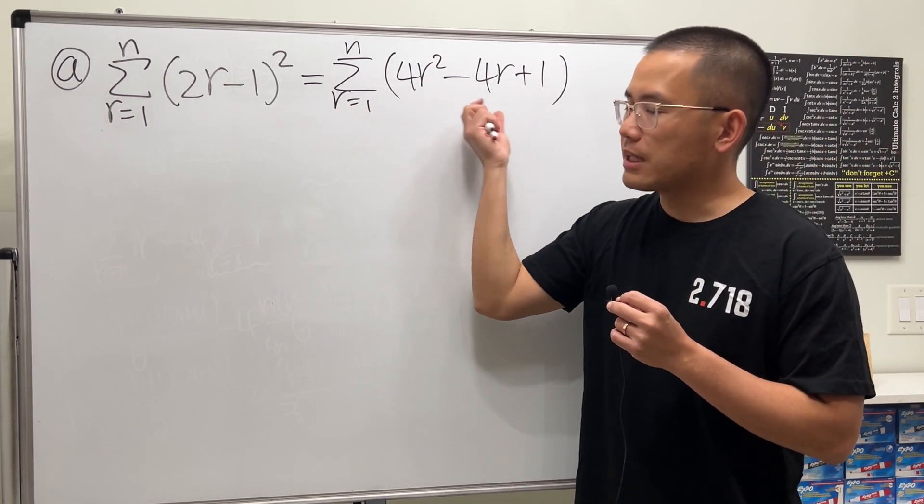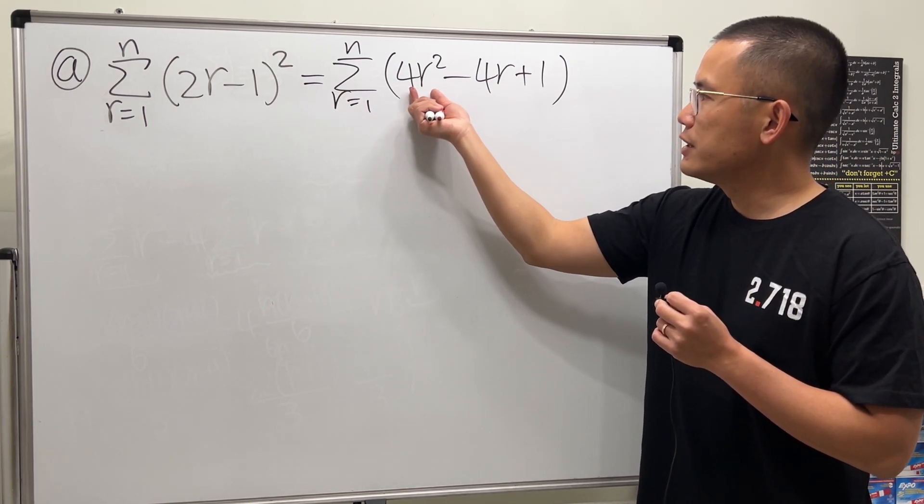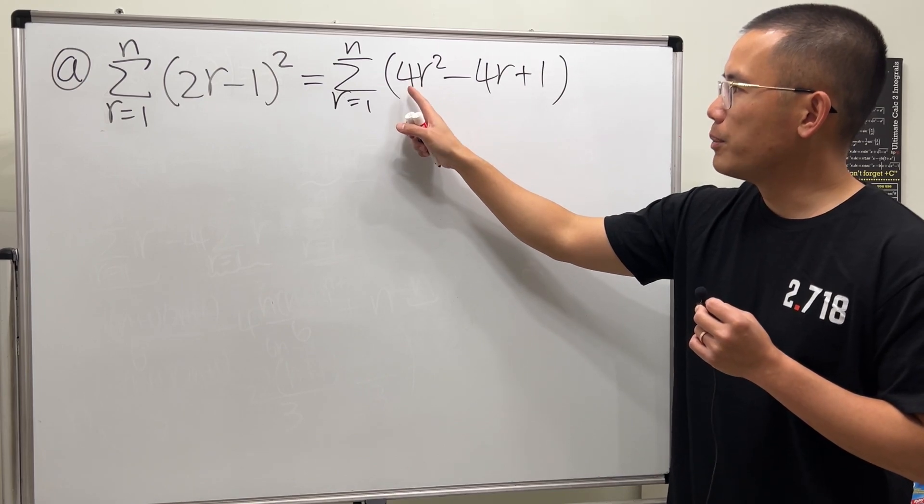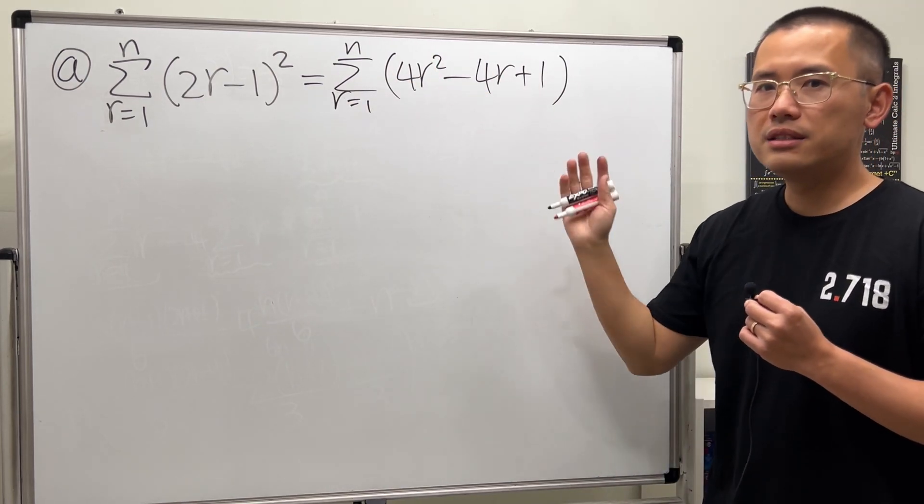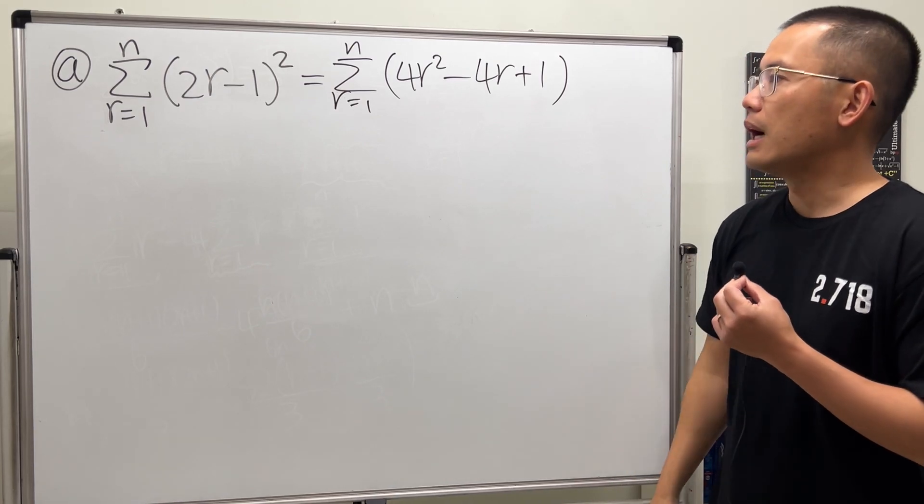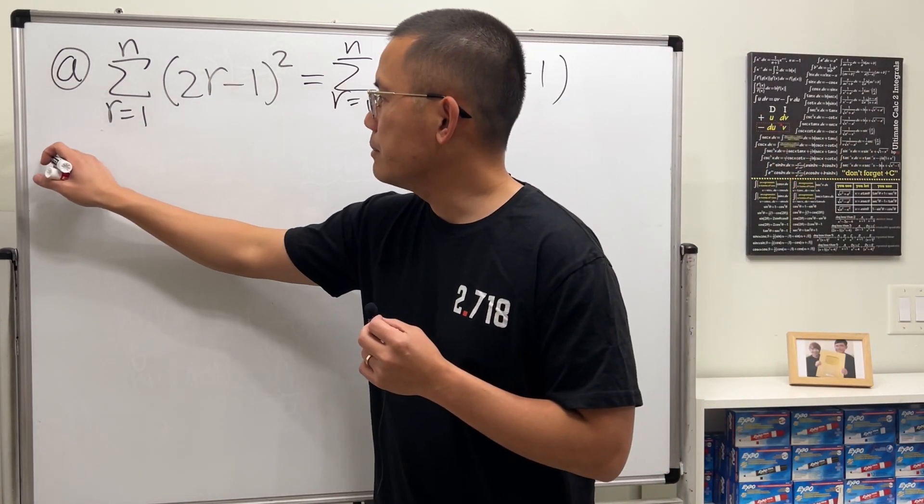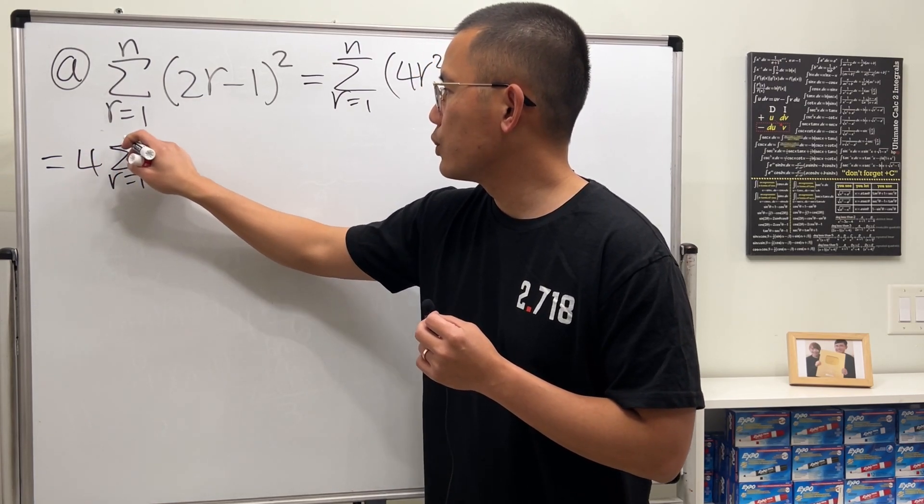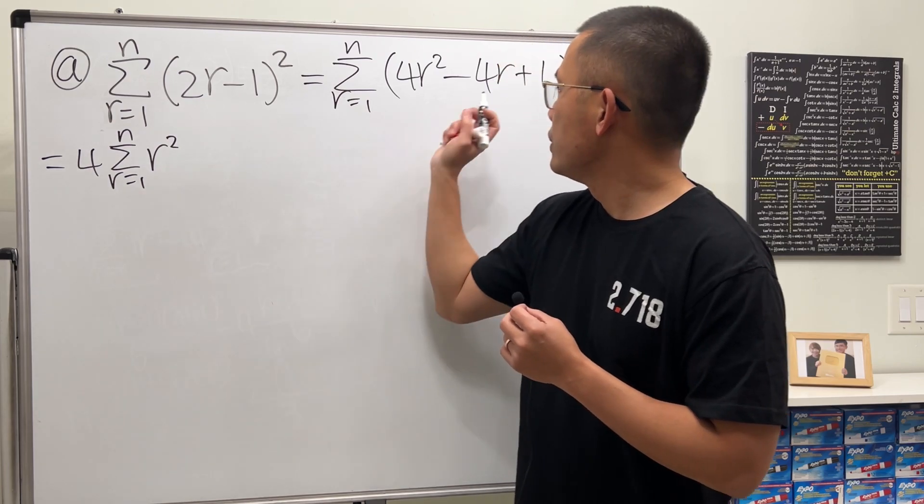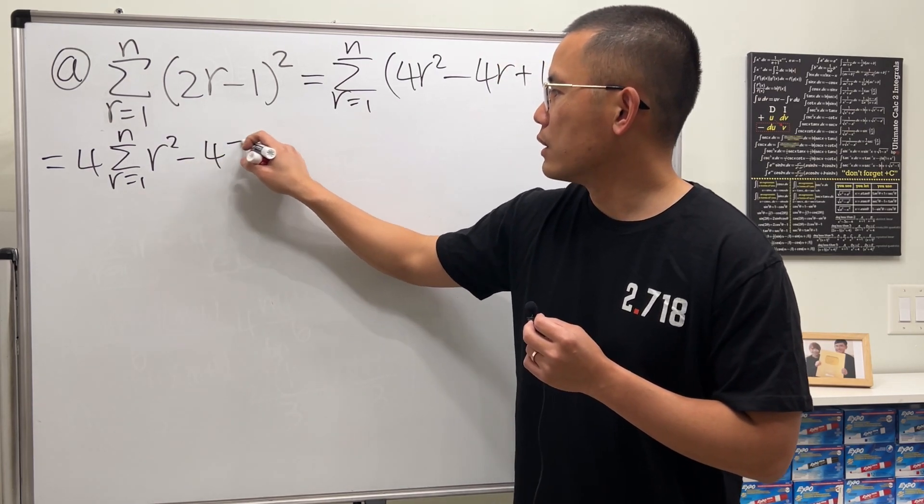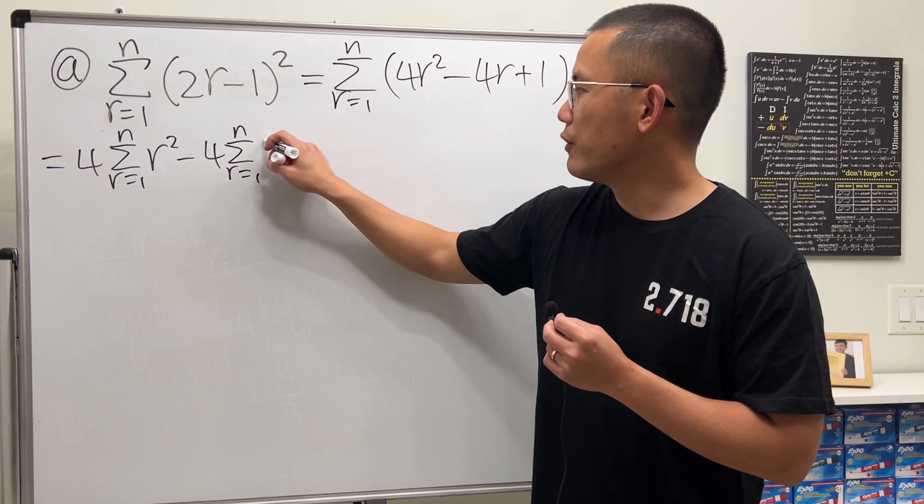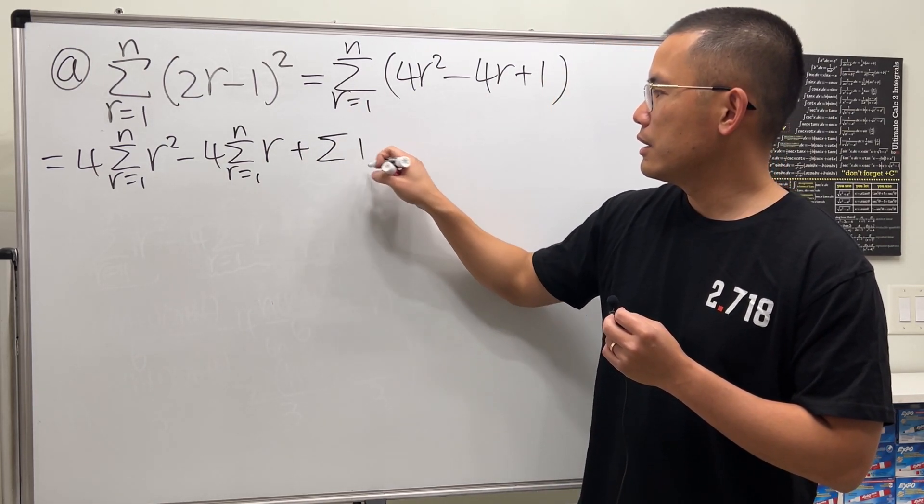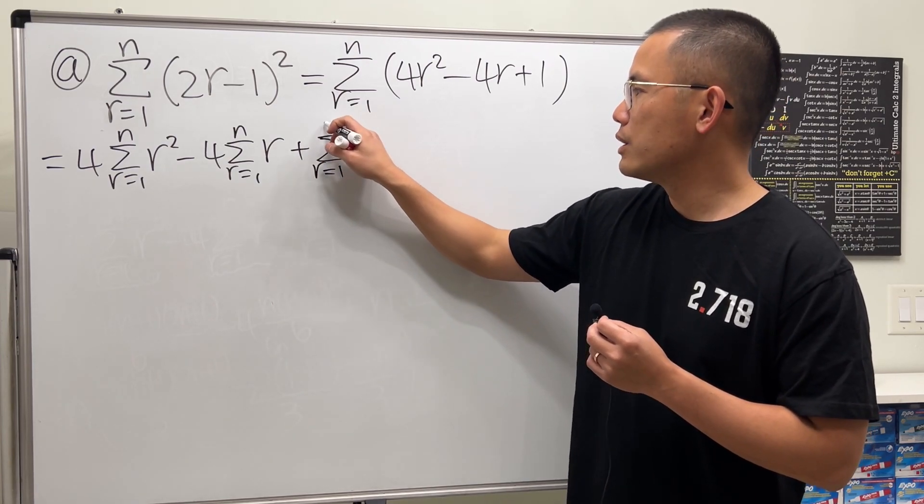Then we can break down the summation meaning that we can just do the summation of this part, this part, and this part. And also if we have a constant multiple we can put it on the outside. And this is because summation is what we call a linear operation. So this right here becomes putting the 4 on the outside and then sum r goes from 1 to n of r squared and then we subtract 4 times the summation r goes from 1 to n of r. And lastly we add the summation and here we have the summation r goes from 1 to n.